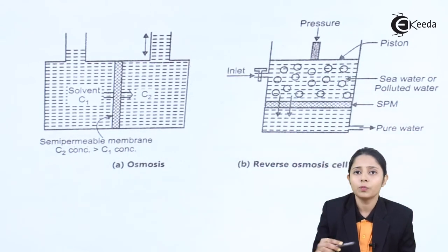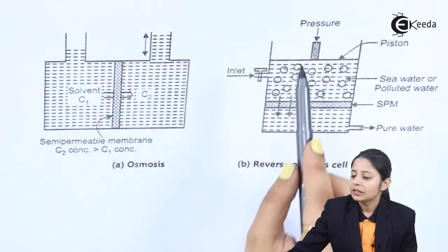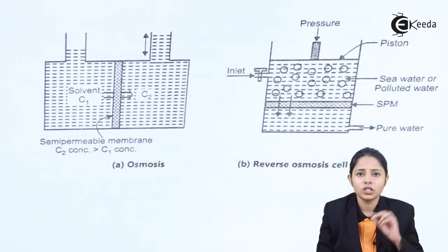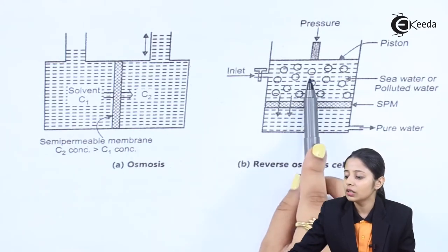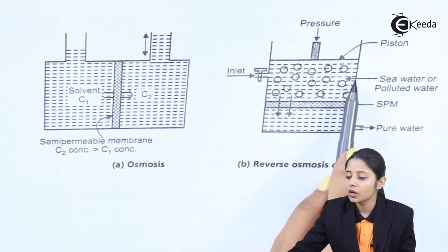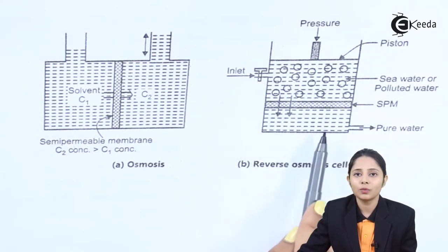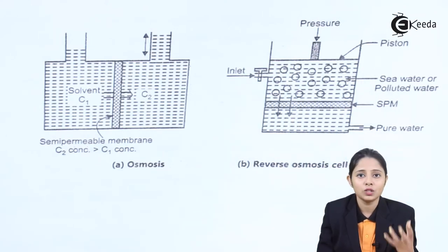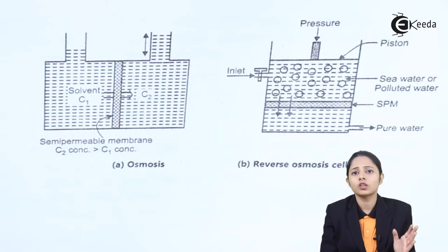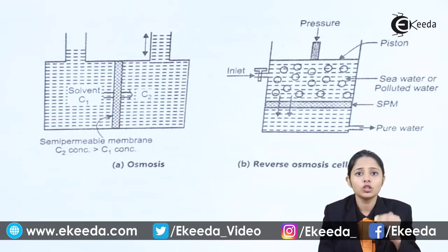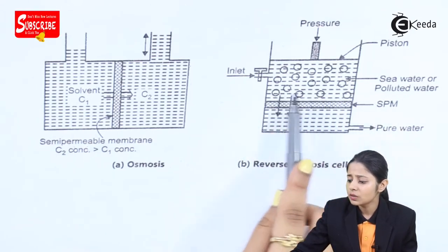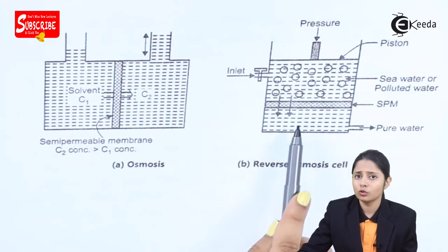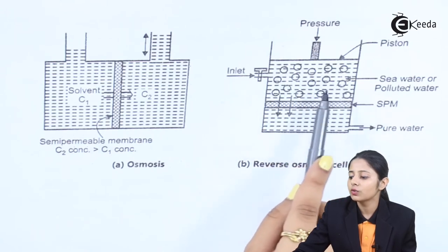We use a piston to create pressure. We generate pressure on the sea water that is slightly higher than the osmotic pressure. Because of this increase in pressure, particles flow from the higher concentration to the lower concentration. Pure water is the lower concentration side, and sea water is the higher concentration side because it contains not only water but all kinds of impurities. So the solvent — water — moves from higher concentration to lower concentration through the semi-permeable membrane. Only H₂O molecules can move through the membrane; all other impurities present cannot pass through it.